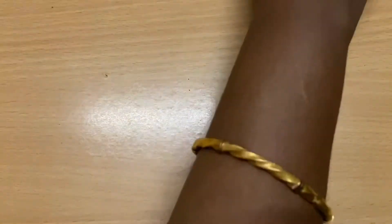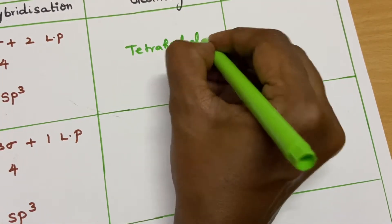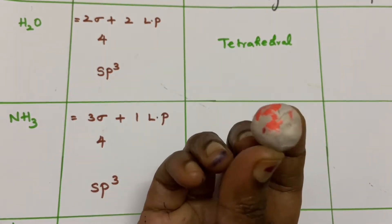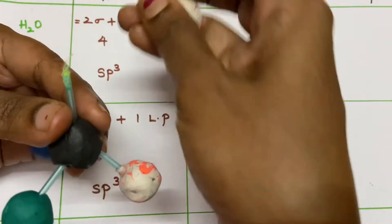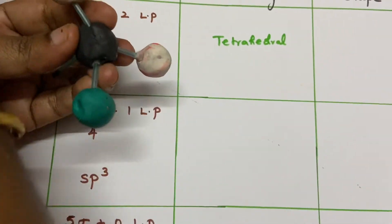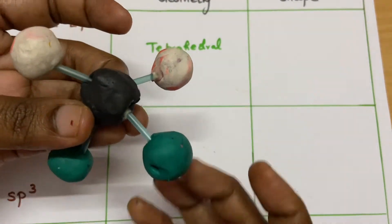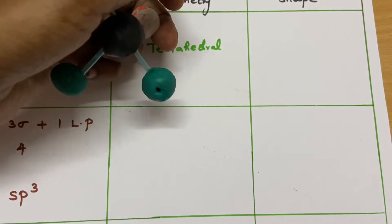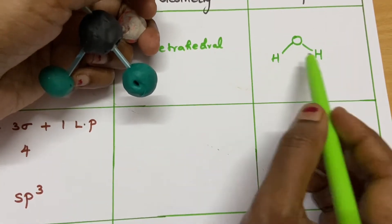Now comes the water molecule. We know SP3 geometry is tetrahedral. But in water there are two lone pairs. So I place the central atom with two lone pairs on top and two bonded hydrogen atoms below. While deriving the shape, you have to forget about the lone pair — ignore the lone pairs and see the structure. It is a bent shape. That is how the water molecule takes a bent shape.